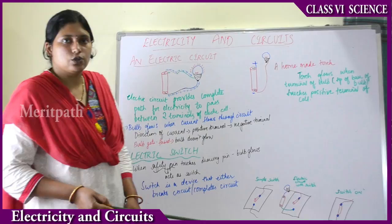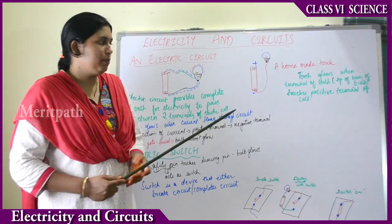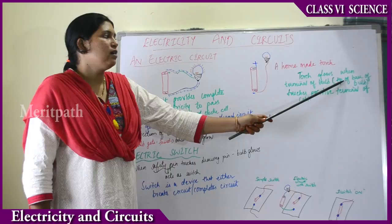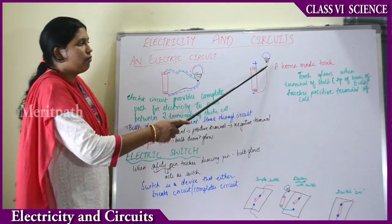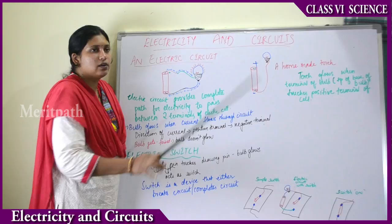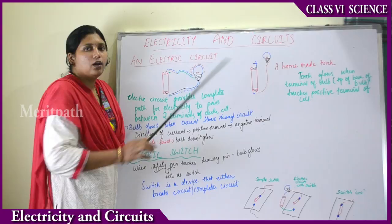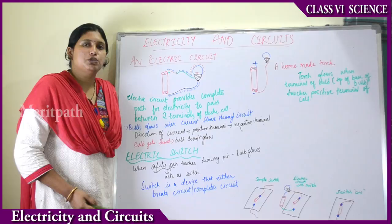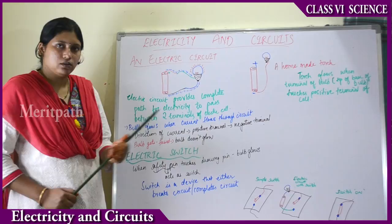This principle applies in the torch as well. When we switch on, the circuit completes, electricity flows, and the bulb glows. The torch glows when the tip of the base of the bulb touches the positive terminal of the cell. Only when this tip touches the positive terminal does the bulb glow; otherwise it doesn't glow. The same principle is applied in the torches we use when electricity goes off.